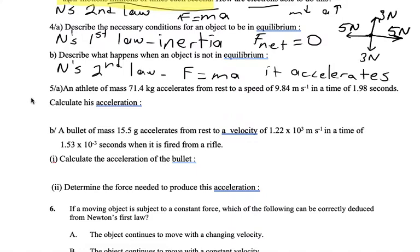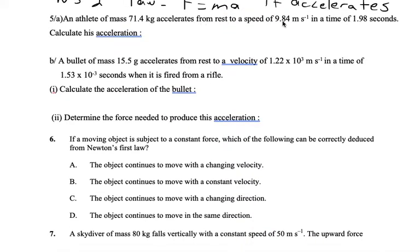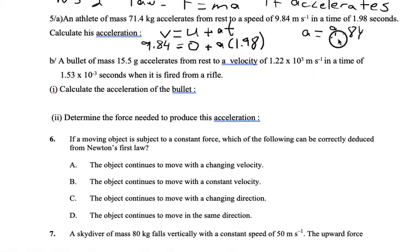So here's a calculation question. An athlete of 71.4 kilograms accelerates from rest to a speed of such in a time of 1.98 seconds. Calculate its acceleration. We can use our good old V equals U plus AT formula. We are going from rest, zero initial speed to a speed of 9.84. In a time of 1.98 seconds. So acceleration is going to be 9.84 divided by 1.98, whatever that is in meters per second square. You can do this in your calculator.